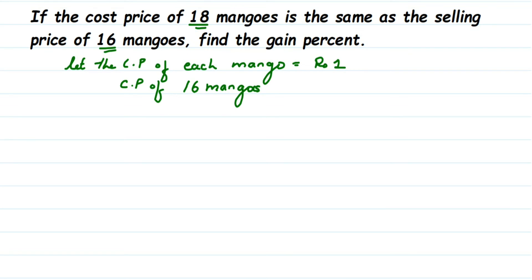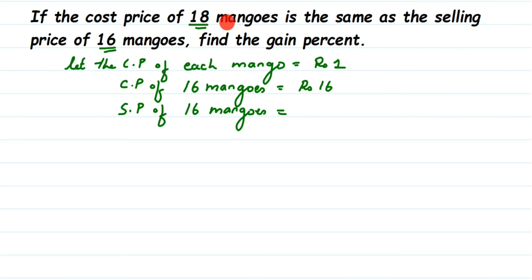Now, what is the selling price of 16 mangoes? The question says the selling price of 16 mangoes is the same as the cost price of 18 mangoes. Since we assumed the cost price of one mango is 1 rupee, the cost price of 18 mangoes is 18 rupees. Therefore, the selling price of 16 mangoes is 18 rupees.